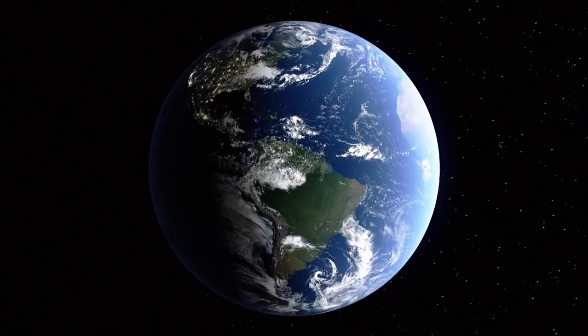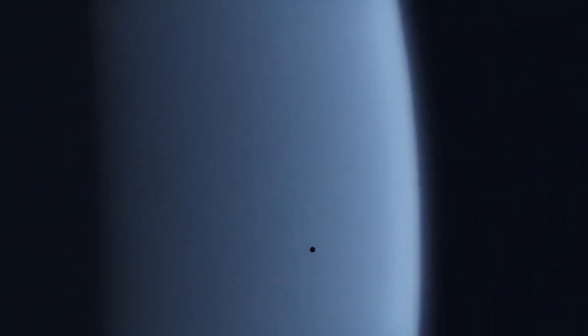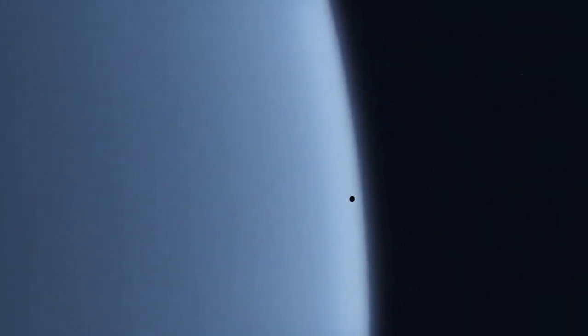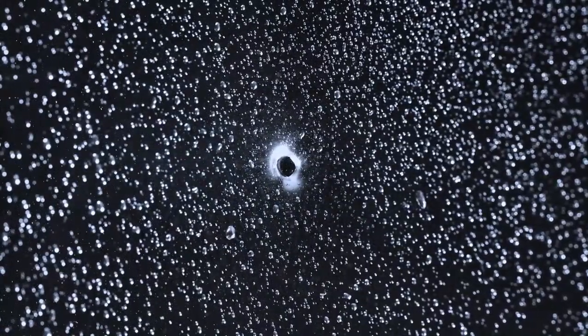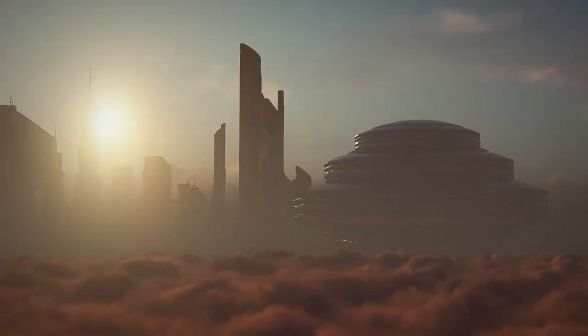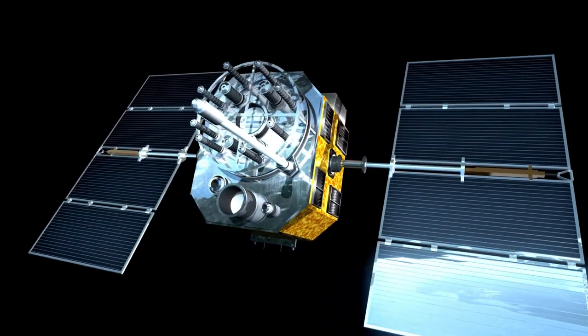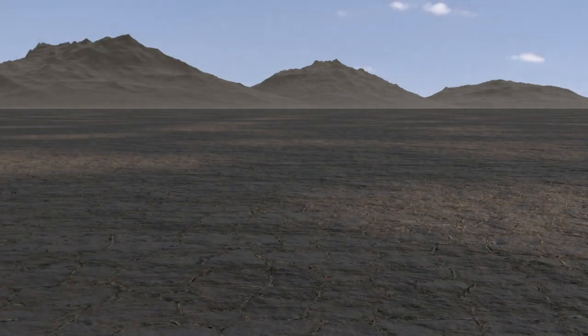Proxima b stands as both a beacon of hope and a stark reminder of the challenges that await us in the cosmos. The James Webb Telescope's revelations—extreme conditions, mysterious lights, and potential traces of life—have painted a picture that is as haunting as it is intriguing. Could Proxima b be a snapshot of what lies ahead for humanity? A glimpse of our future as we venture beyond Earth? Or is it a warning—a reminder that not all corners of the universe are welcoming to life as we know it?